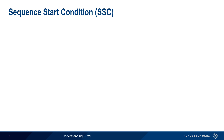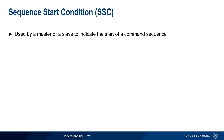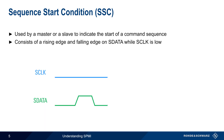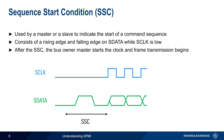Let's begin by explaining the sequence start condition, or SSC. This sequence is used by a master or slave to indicate the start of a command sequence. This is done by generating a rising edge and then a falling edge on the data line, while the clock line is in the low state. After the sequence start condition, the bus owner master starts the clock, and frame transmission can then begin.